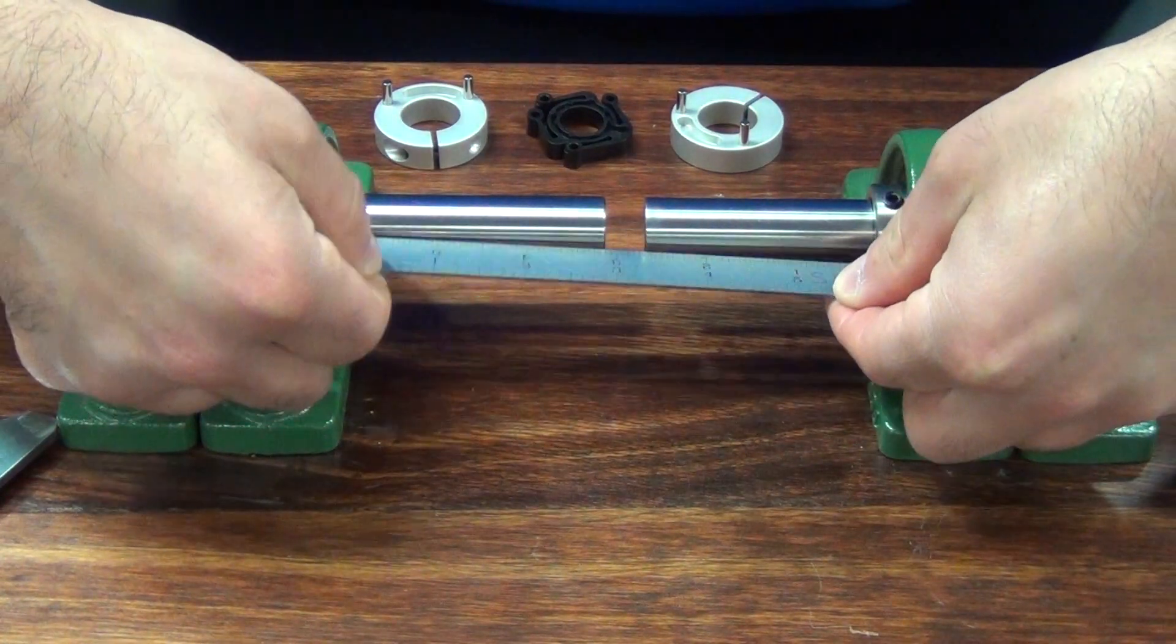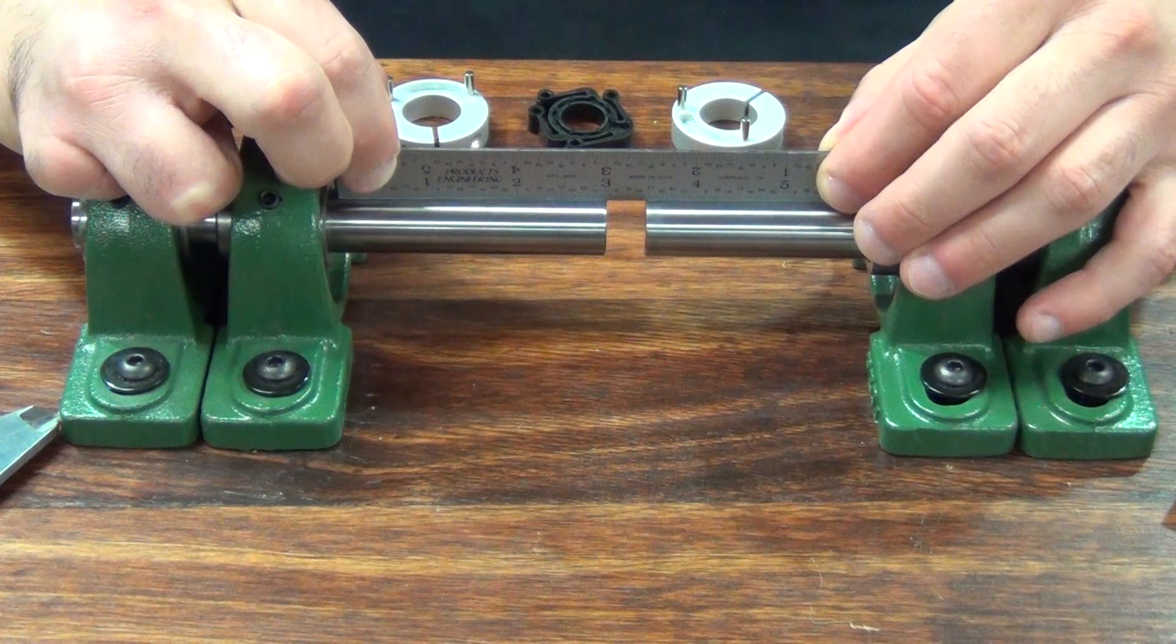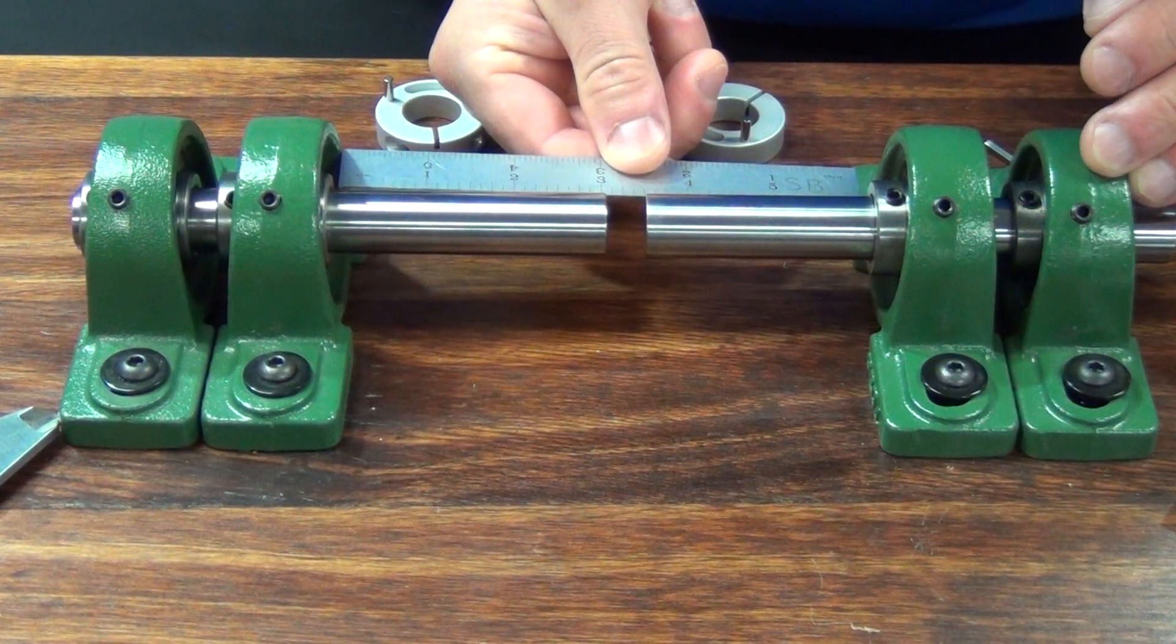Check that the shaft misalignment is within the parameters of the coupling. I'm doing this with a scale, however, you can also do it with a dial indicator or a laser system.